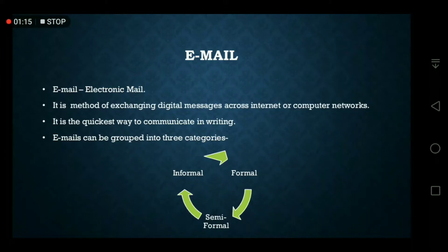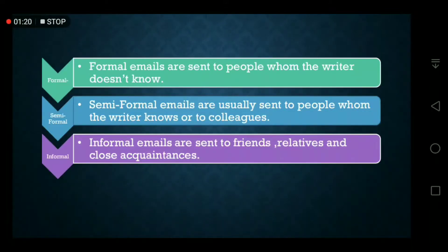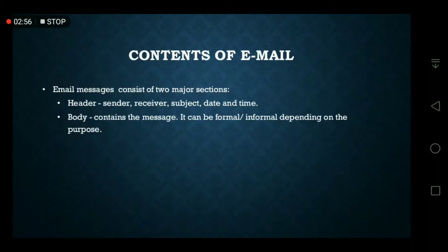Emails can be grouped into three categories: formal emails, semi-formal emails, and informal emails. Formal emails are sent to people whom the writer doesn't know. Semi-formal emails are usually sent to people whom the writer knows, or to your colleagues or co-workers.